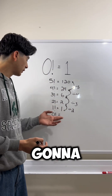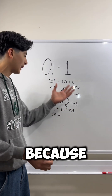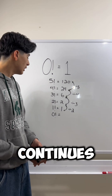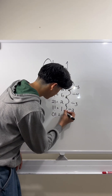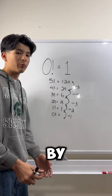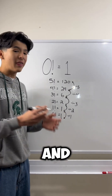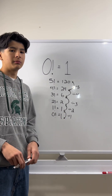What do you think we're going to do here? Well, we're going to divide by 1 because that's what the pattern continues. So let's just do that. What is 1 divided by 1? Obviously, it's just 1. And that's why 0 factorial equals 1.